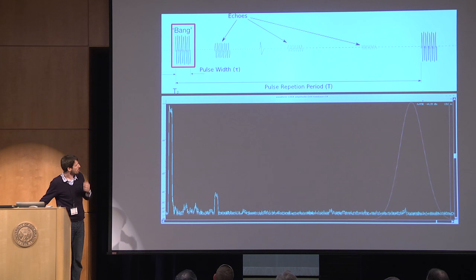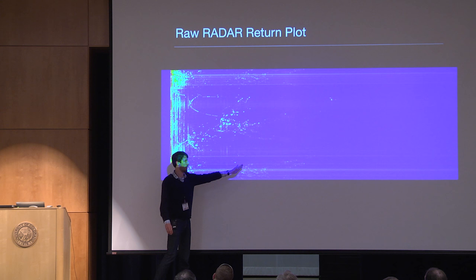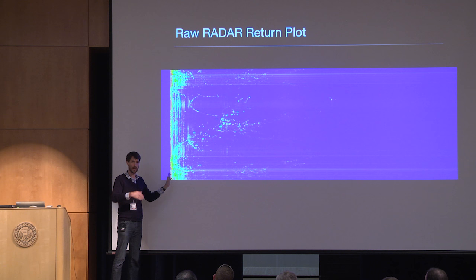As an external observer with an SDR, you synchronize to the bang — the bangs are happening across the left side — and then plot the magnitude of the signal after that, ending up with these return plots. You're capturing a particular bandwidth, so each pixel represents a certain time delay since the bang, and therefore you can calculate range to your object.